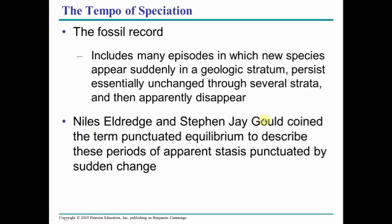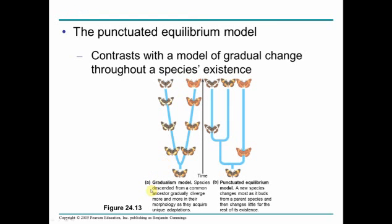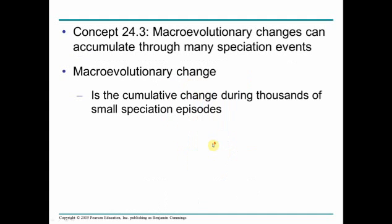Eldridge and Gould — Stephen Jay Gould — came up with the term punctuated equilibrium, an idea to explain this, where there are large periods of stasis or no change, punctuated by very sudden change. They say this sudden change is caused by drastic events. This contrasts with gradualism — slow, incremental changes over time — versus punctuated equilibrium's long periods of no change followed by sudden change due to some event, like a fire or a disease outbreak.